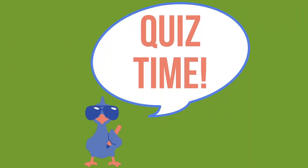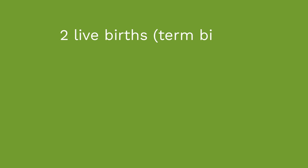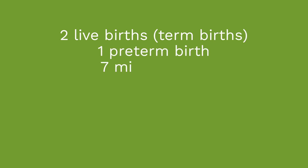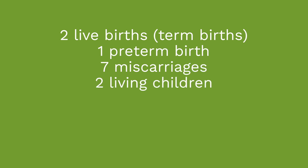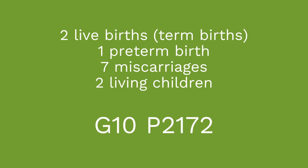Let's do a GTPAL calculation. You have a patient who has had two term deliveries, one preterm delivery, and seven miscarriages, and she currently has two living children. What is the GTPAL for this patient? The G should be 10 — two term deliveries plus one preterm delivery plus seven miscarriages equals 10 total pregnancies. The T number should be two — she had two term births. The P should be one — she had one preterm birth. The A for abortion should be seven — she had seven miscarriages. And the L number should be two, because she only has two living children.